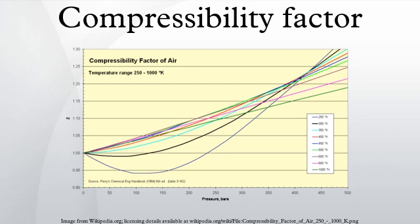In general, deviation from ideal behavior becomes more significant the closer a gas is to a phase change, the lower the temperature, or the larger the pressure. Compressibility factor values are usually obtained by calculation from equations of state, such as the virial equation, which take compound-specific empirical constants as input.